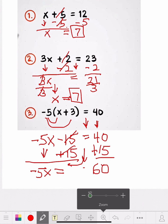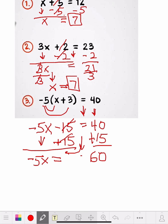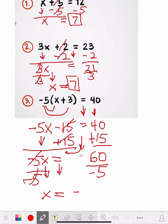So now we have negative 5x equals 60. We have to get rid of the negative 5. That's negative 5 times x. What's the opposite of that? Division. So we divide both sides by negative 5. The negative 5s cross each other out. The x comes down. x equals 60 divided by negative 5, which is negative 12. So my answer is x equals negative 12. I'll box that so the teacher knows that's my answer.